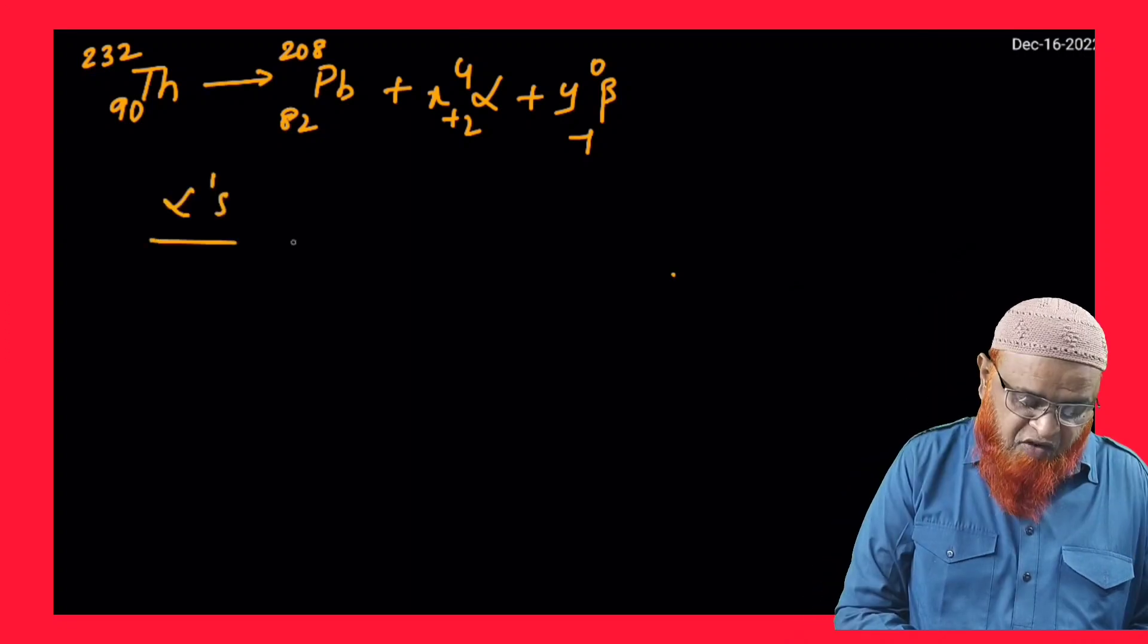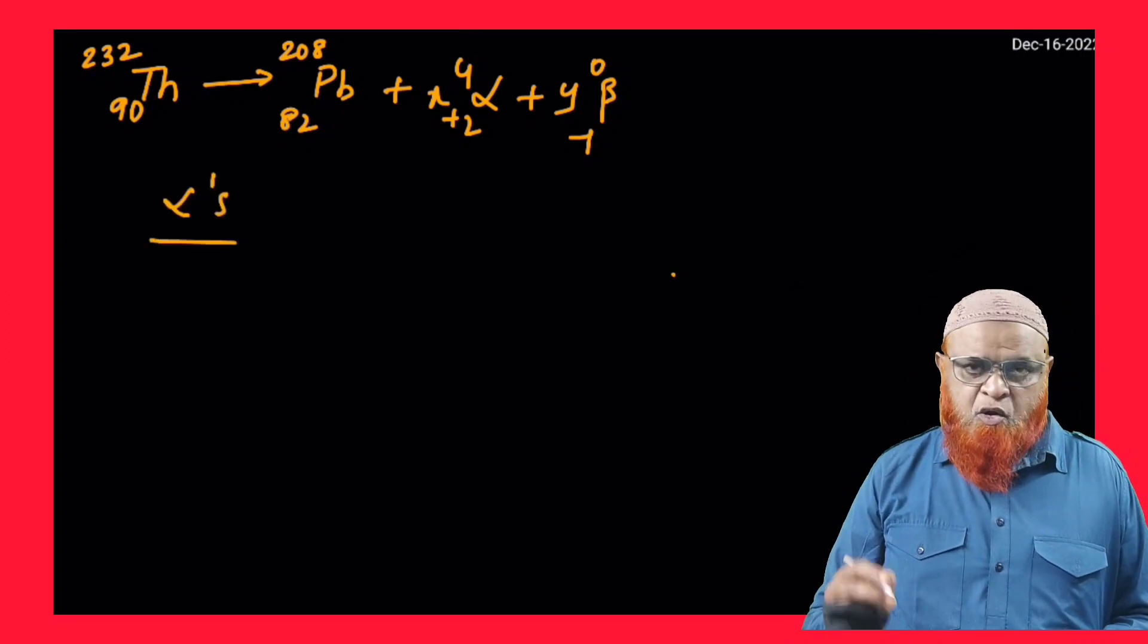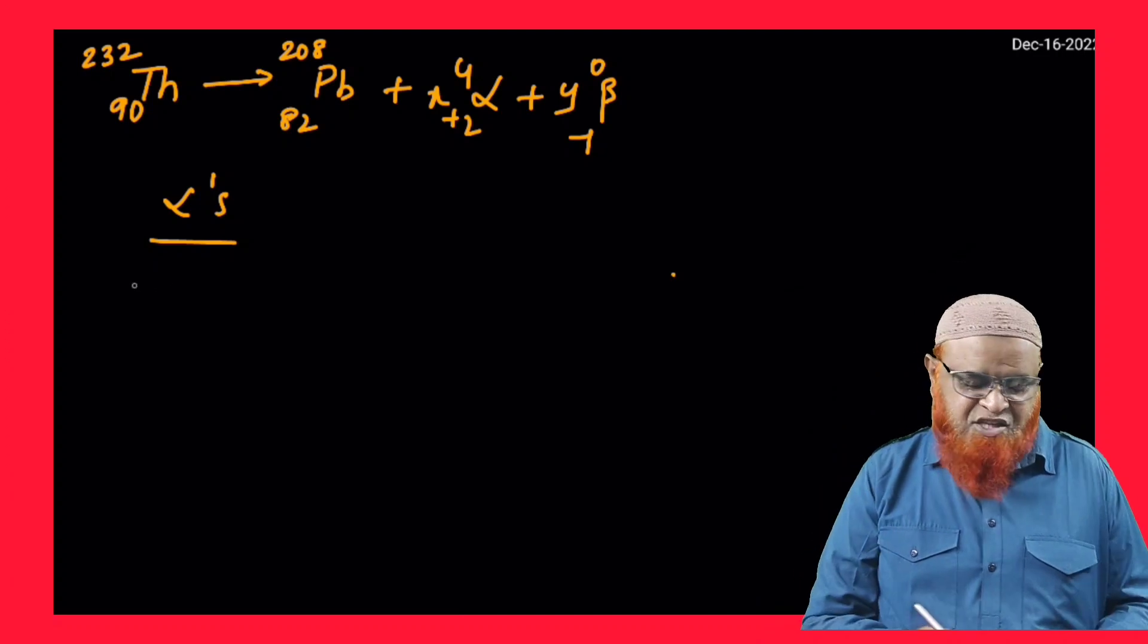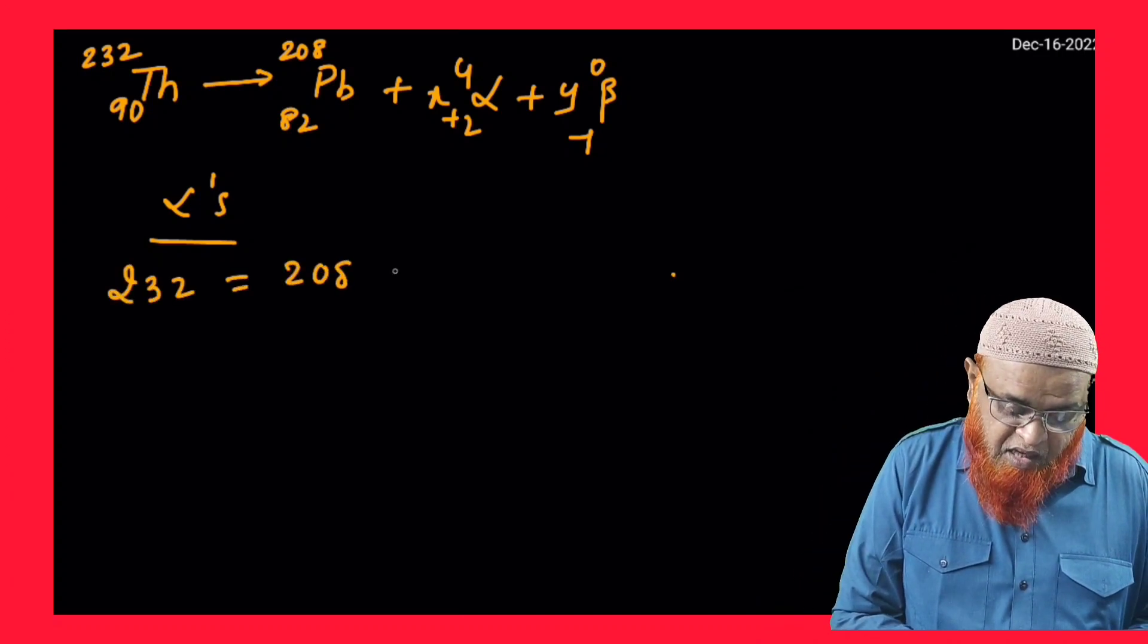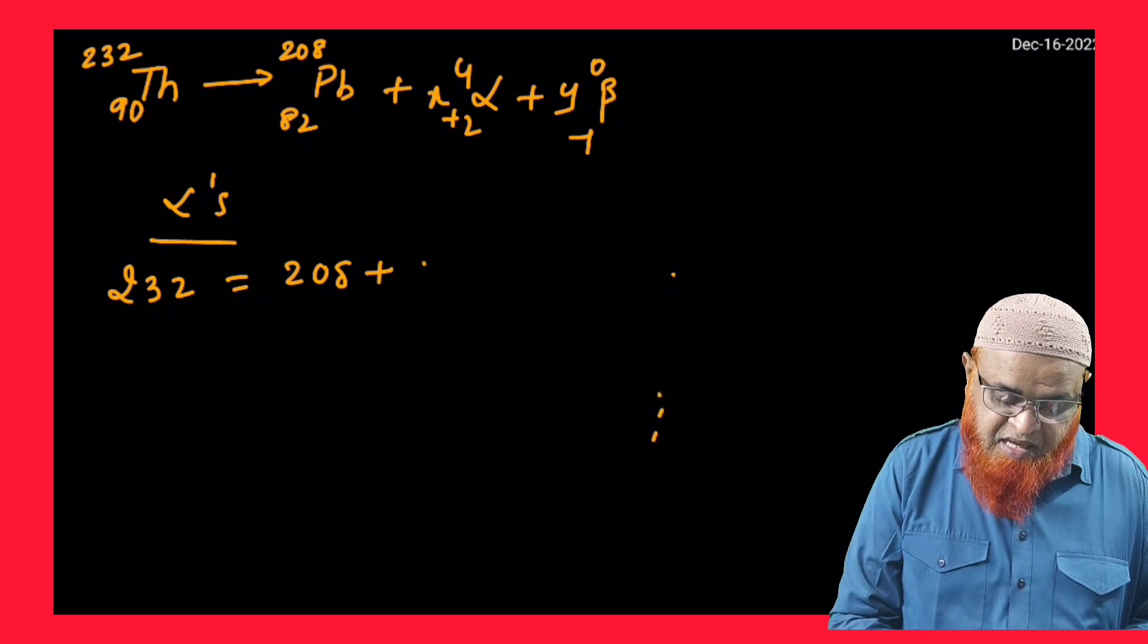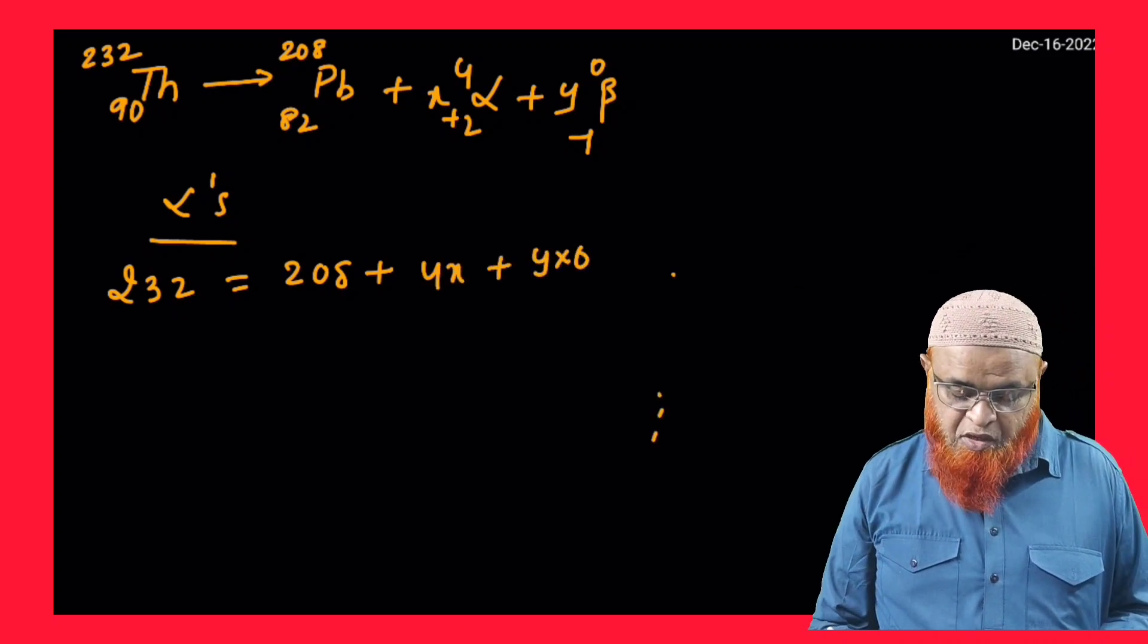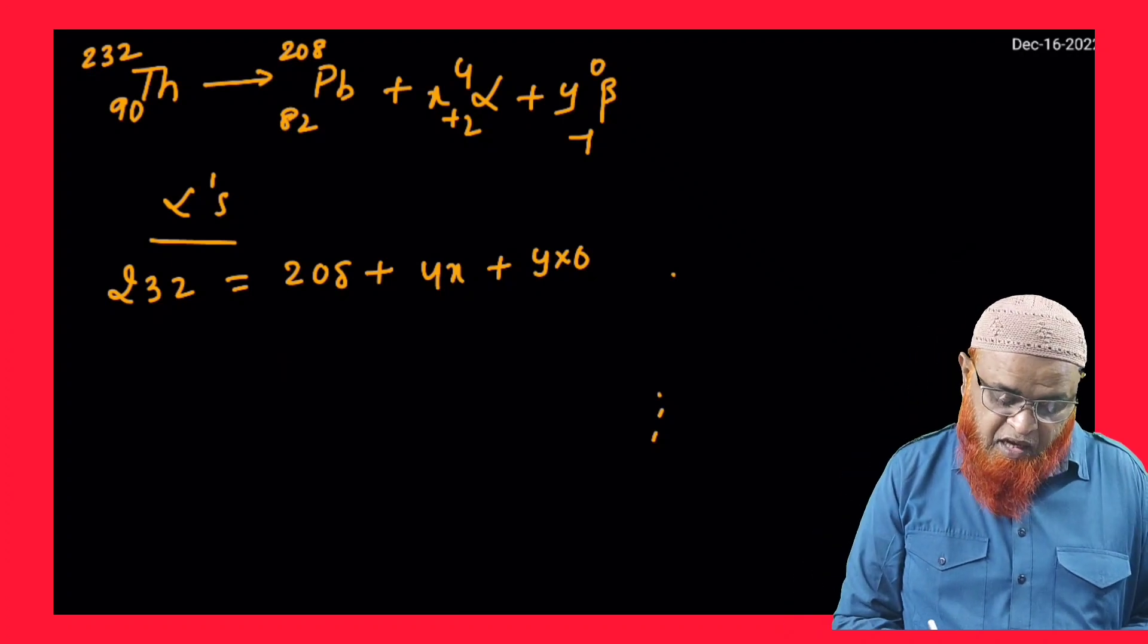First, you have to find out alpha. To find out alpha, you have to consider the mass numbers and make them equal in a simple strategic way. You just see here: 232 = 208 + x×4, which is 4x + y×0, which is 0. So now, if you want to find out this x...